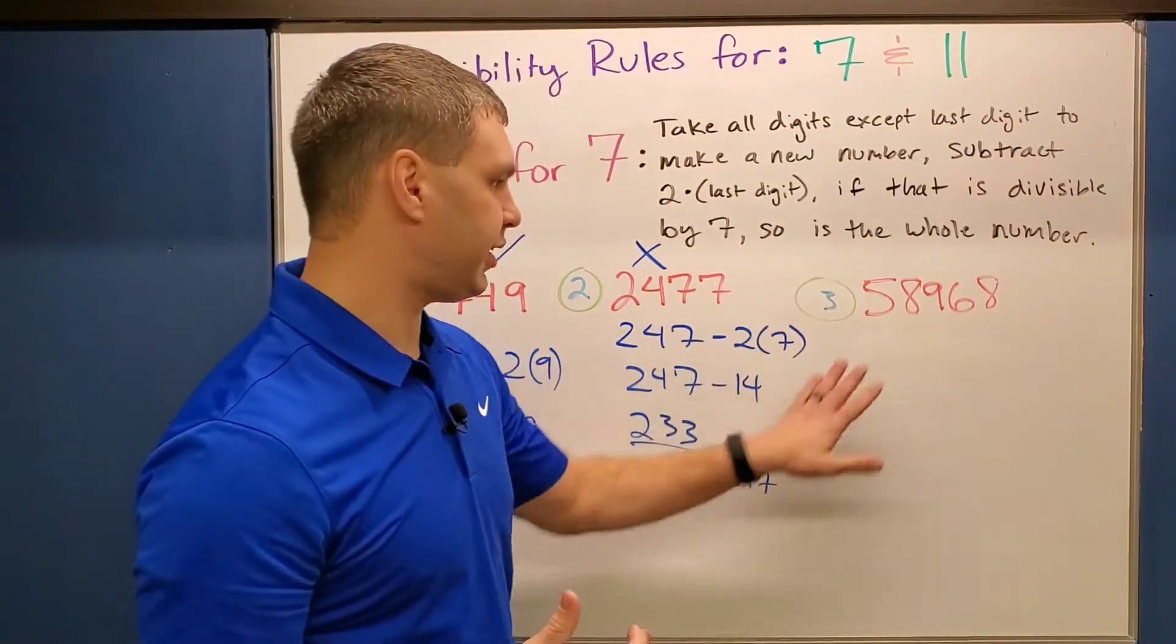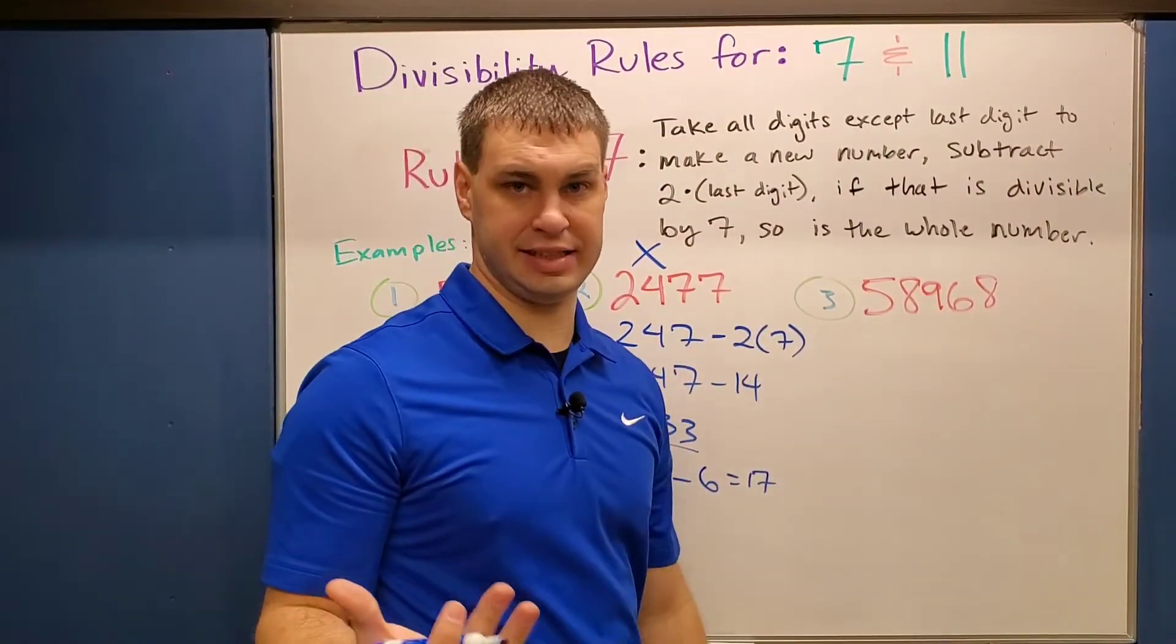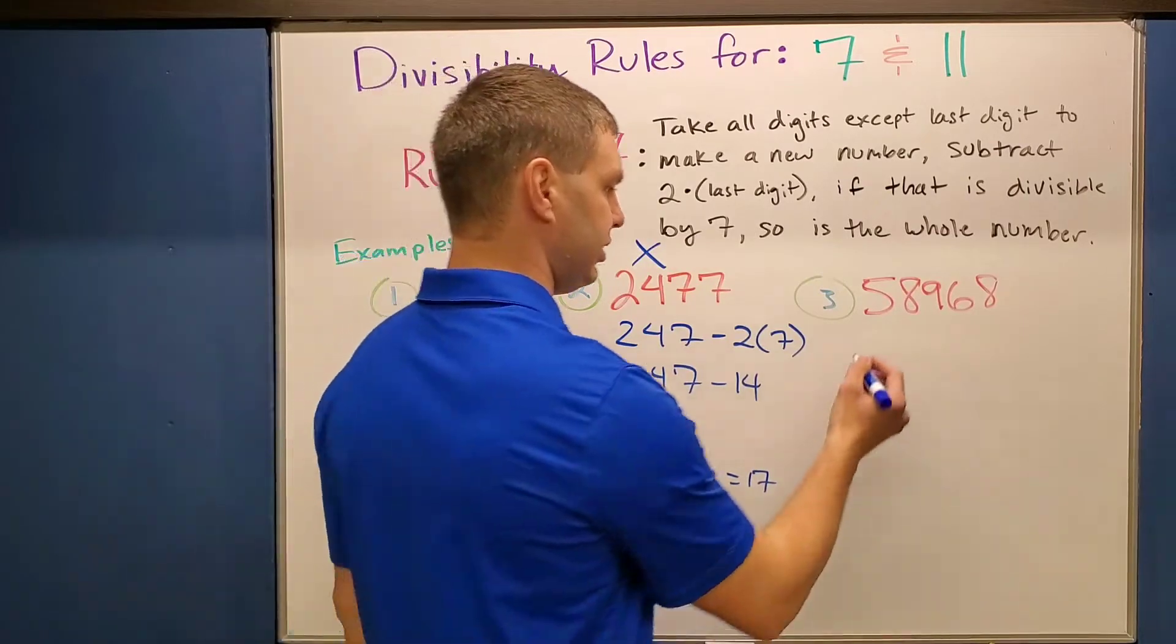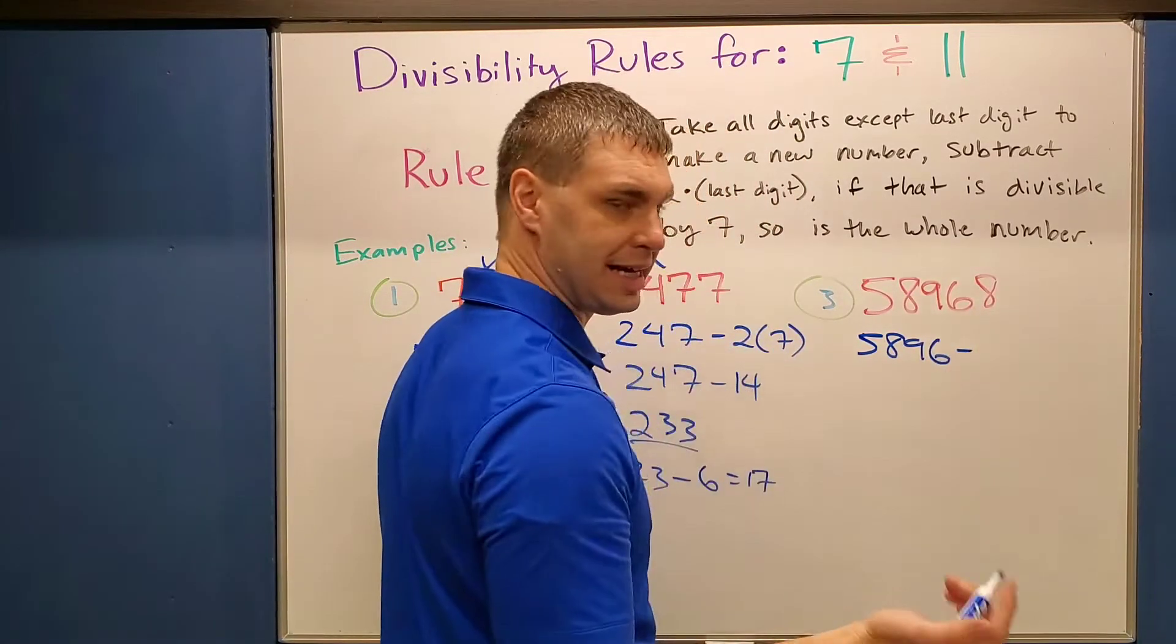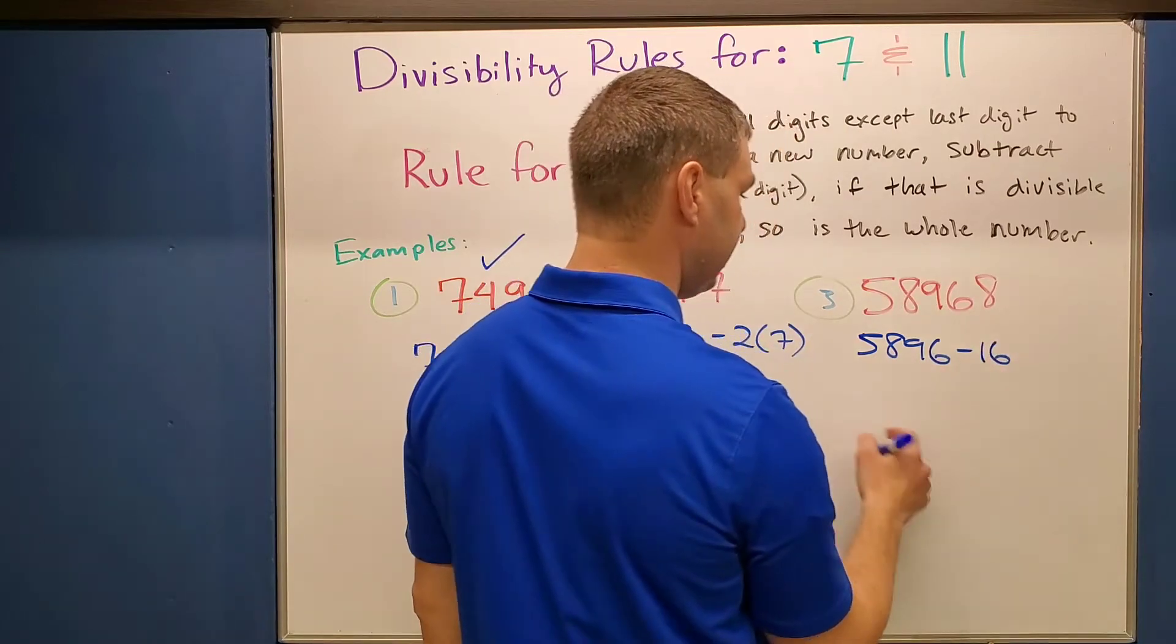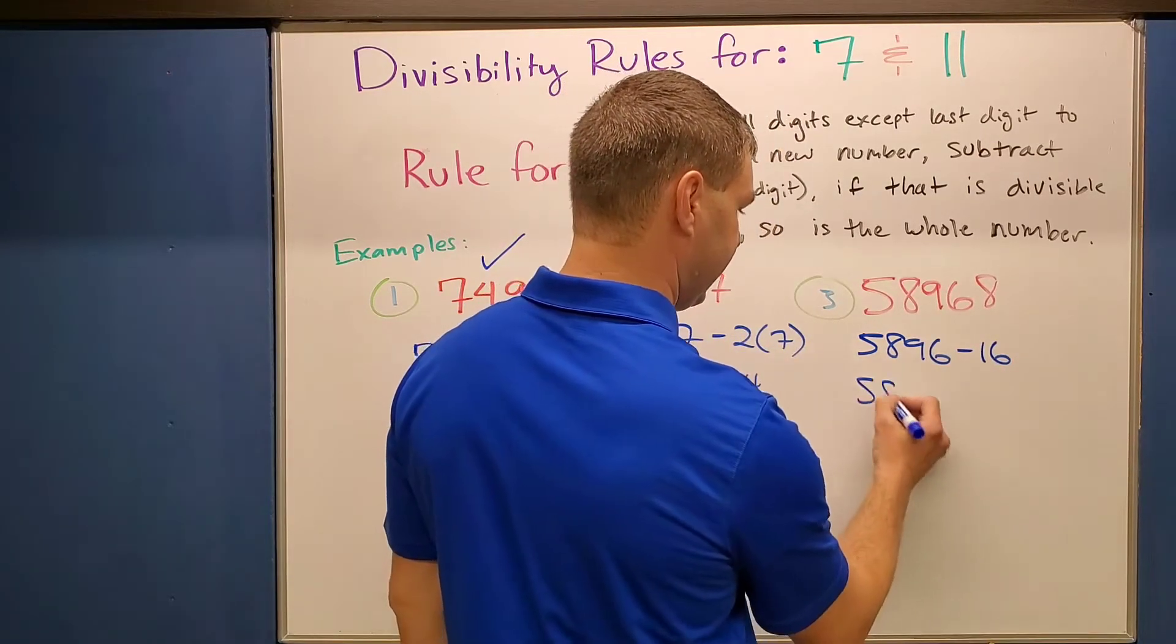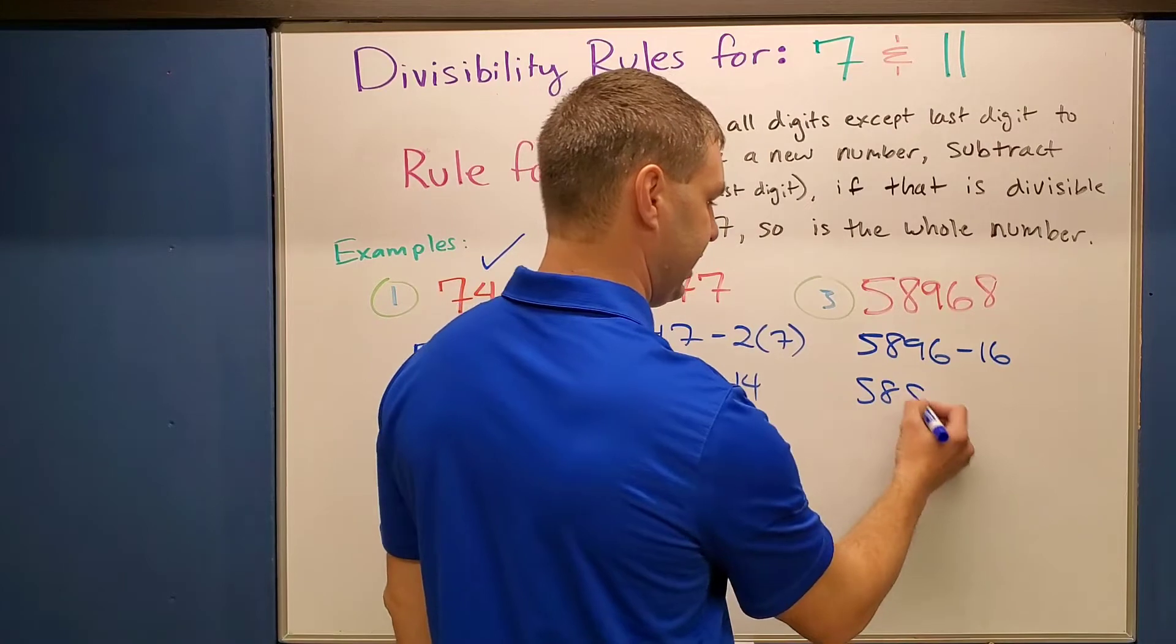Number 3 says 58,968. Let's try the same thing. Try to go a little bit faster this time. So 5, 8, 9, 6 minus 2 times my last digit here is going to be 16. So that would leave me with 5, 8, and then 96 minus 16 is 80.